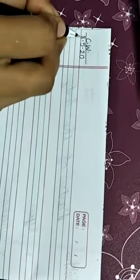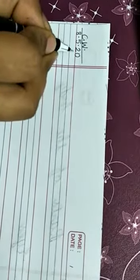So children, after completing the topic let's do the written book. The written book should be done in your copy. So first of all write here C.W. as usual, after that today's date. What is the date today? Today's date is 8.5.20, that is 8 May 2020.